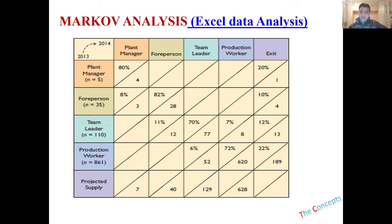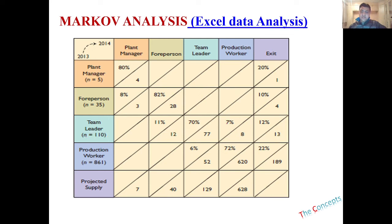At the team leader level, you have 110 people: 77 are going to remain, 12 might be promoted to the next level, 13 will leave, and eight are expected to be demoted to the production worker level. At the production worker level, you have 861 people, of which 620 will remain, 52 are supposed to be promoted, and 189 are expected to leave. This is what you expect will happen in the year or years for which you are planning.